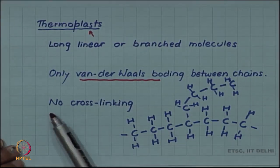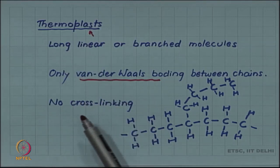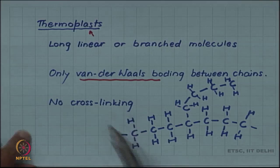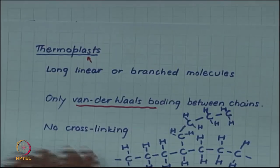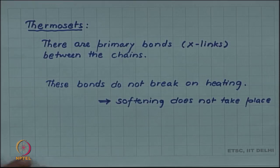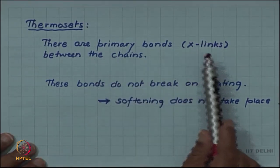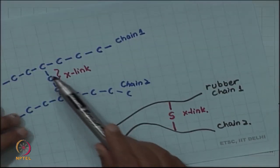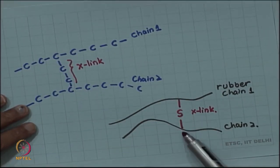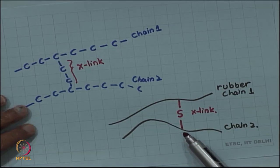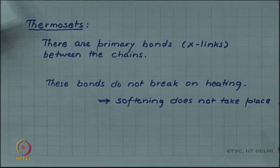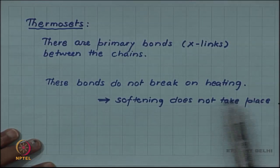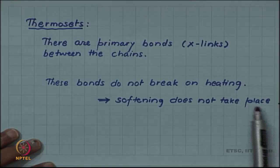There is no cross linking in thermoplasts. We will see that in thermoset such cross linkings are there. In thermosets there are primary bonds or cross links between the chains. These cross links are also primary bonds. These bonds do not break on heating. So, softening does not take place.